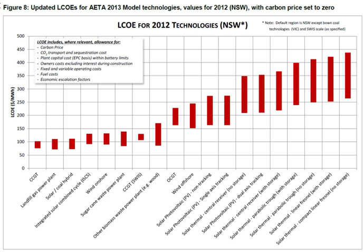Typically the LCOE is calculated over the design lifetime of a plant, which is usually 20 to 40 years, and given in the units of currency per kilowatt-hour or megawatt-hour — for example, AUD per kilowatt-hour or EUR per kilowatt-hour, or per megawatt-hour.